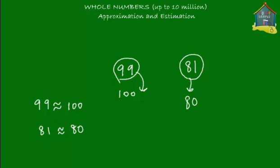That's the introduction to rounding off. But how do you round off numbers? With small numbers like 99 and 81 you just do it in your head, but is there a set of rules for rounding off bigger numbers? In this lesson we will learn how to round off numbers to the nearest ten, the nearest hundred, and the nearest thousand. What you did with 99 and 81 was actually rounding off to the nearest ten.